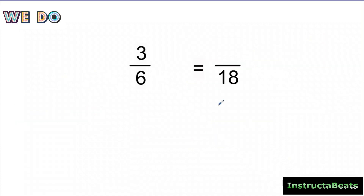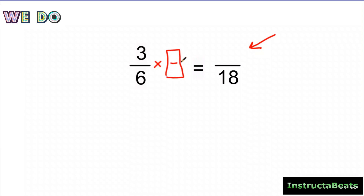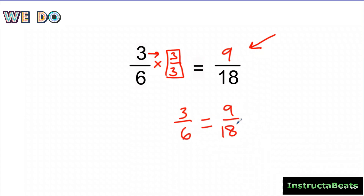How can we use this skill when we already know the denominator we want? For example: how many eighteenths is equivalent to 3 sixths? I draw my big one here. How did I turn 6 into 18? I multiplied by 3. So I use the big one, 3 over 3. If I multiply the denominator by 3, I also multiply the numerator by 3 — because I'm multiplying by 1. So 3 times 3 is 9, and 3 sixths is equivalent to 9 eighteenths.